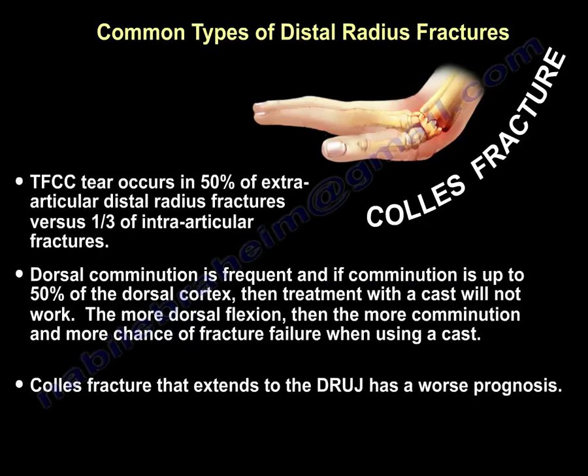TFCC tears occur in about 50% of extra-articular distal radius fractures versus one-third in intra-articular fractures. Dorsal comminution is significant — if comminution involves up to 50% of the dorsal cortex, treatment with a cast will not work. Some believe one-third cortex comminution already prohibits casting. The more dorsal comminution, the more dorsal flexion of the fragment, and the greater the chance of cast treatment failure. Colles fracture extending to the DRUJ has the worst prognosis.